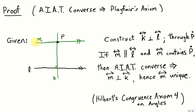So this completes the proof that the alternate interior angle theorem's converse, Euclid's Proposition 29, is in fact logically equivalent to Playfair's axiom.